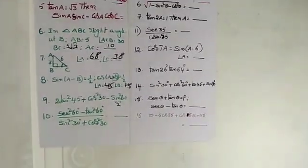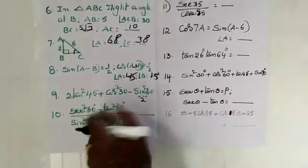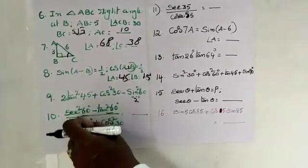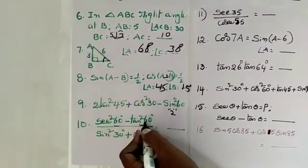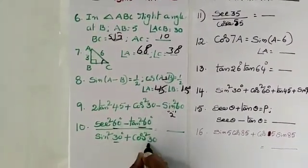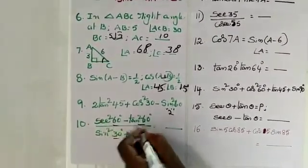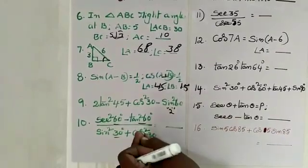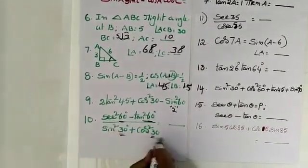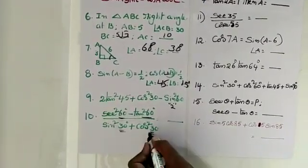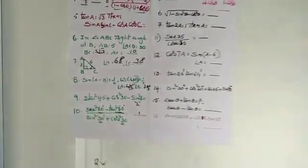It is very easy, we have to observe here. Formulas: this is the second identity - sec squared theta minus tan squared theta is equal to 1. Again sin squared 30 plus cos squared 30 is equal to 1. This identity: whenever angles are equal, sin squared A plus cos squared A equals 1.